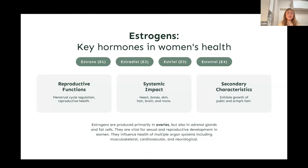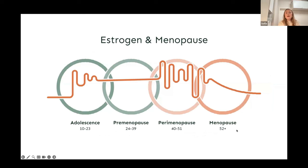Estradiol's functions are not limited to reproduction — we have receptors for it on most of our cells, which is why we say it has a systemic impact, affecting our heart, bones, skin, hair, brain, and more. People usually think estrogen is produced only in the ovaries because it is considered a sex hormone, however it is also produced in the adrenal glands and in fat cells. Estrogens impact our whole body, but mostly our musculoskeletal, cardiovascular, and neurological systems.